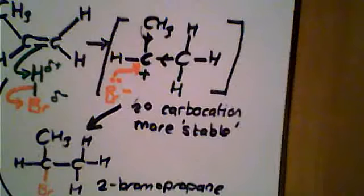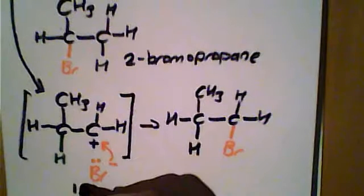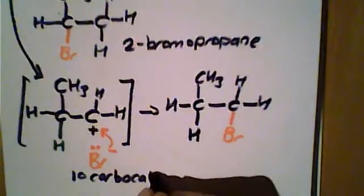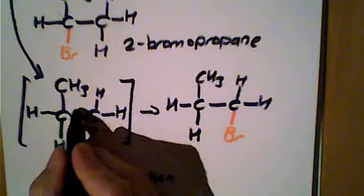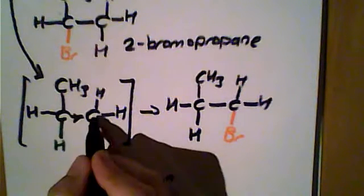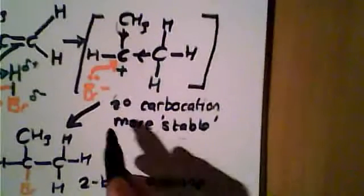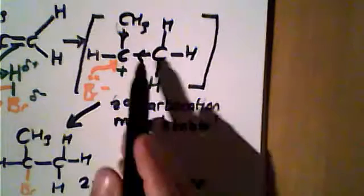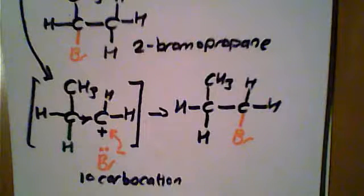The primary carbocation doesn't persist for as long. So this primary carbocation is not as stable. There's not as many of them about because it's only got one alkyl group releasing electrons towards it. So secondary carbocations are much more stable, so the mechanism tends to proceed via a secondary carbocation rather than via a primary carbocation.